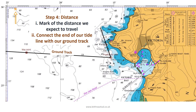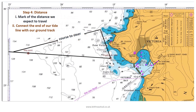Step 4 is to mark off the distance we expect to travel at our current boat speed. We've anticipated that for this passage our boat speed will be six knots, so we connect the end of our tideline with our ground track by marking a line that is six nautical miles long. This line is our water track and it represents the course that we need to steer in degrees true in order to sail along our ground track.